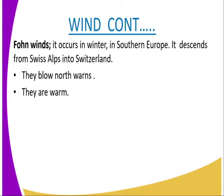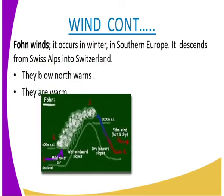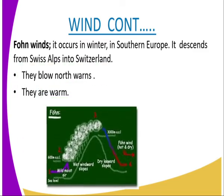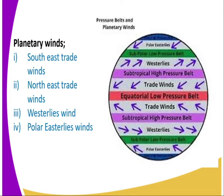Another local wind is the fohn wind. It occurs in winter in southern Europe, descending from the Swiss Alps into Switzerland. These winds blow northwards and they are warm. Then we have the planetary winds, of which there are a number — we have the trade winds, that is the southeast trade winds and the northeast trade winds, the westerly winds, and the polar easterly winds.